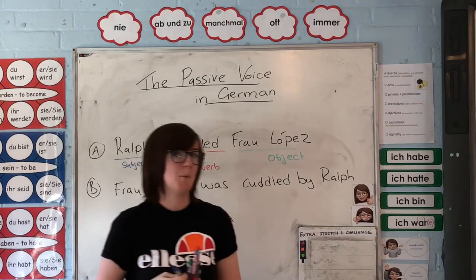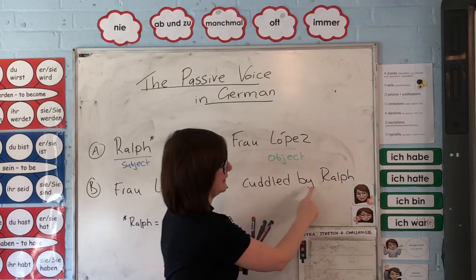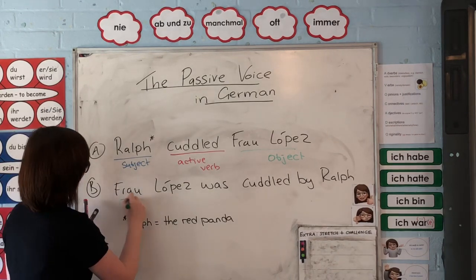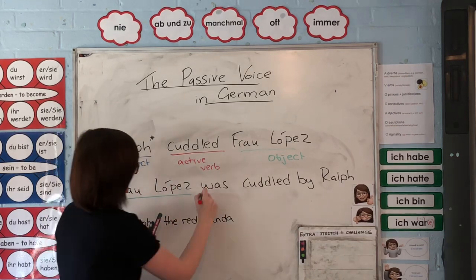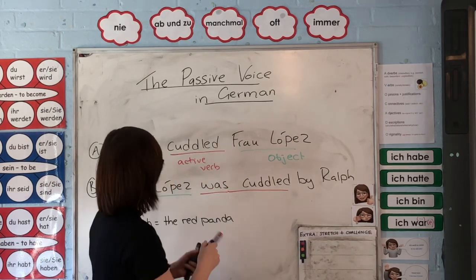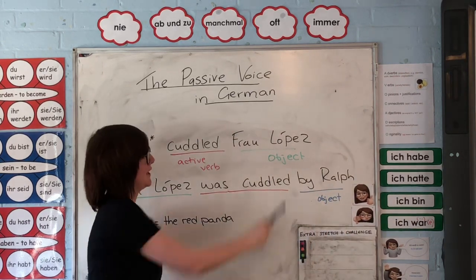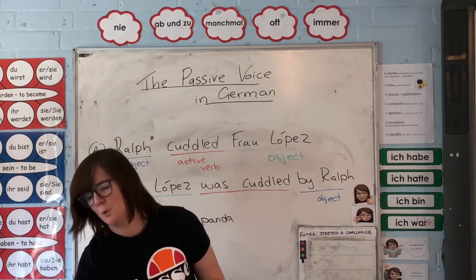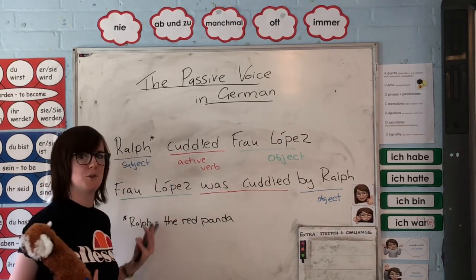But what about if we want to swap the subject and the object around? Now we've got a second sentence: 'Frau Lopez was cuddled by Ralph.' So who is the subject in the sentence? You guessed it — Frau Lopez. And then we've got a passive verb. And then we have 'by Ralph', who is now the object of the sentence. So as you can see, in the first sentence I'm over here, but I've switched to here. I'm now the subject of the sentence, making me — not more important than Ralph, because let's face it, it's quite cute — but just for the sake of grammar, I am now the subject, so I am the focus of the sentence.